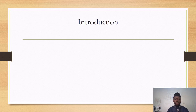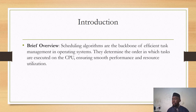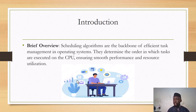Introduction. So, what exactly is a scheduling algorithm? Imagine your computer as a busy manager juggling multiple tasks or processes at once. Scheduling algorithms are like the manager's strategy for deciding which task gets to use the CPU next. Briefly, scheduling algorithms are the backbone of efficient task management in operating systems. They determine the order in which tasks are executed on the CPU, ensuring smooth performance and utilization. Take a look at that image — we are seeing someone like a manager trying to do a number of tasks on his computer.